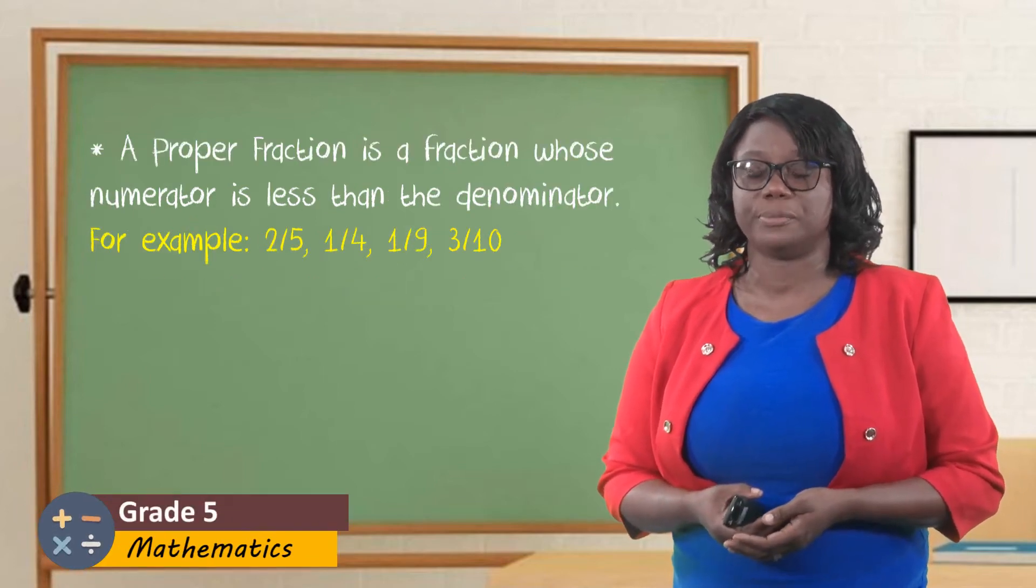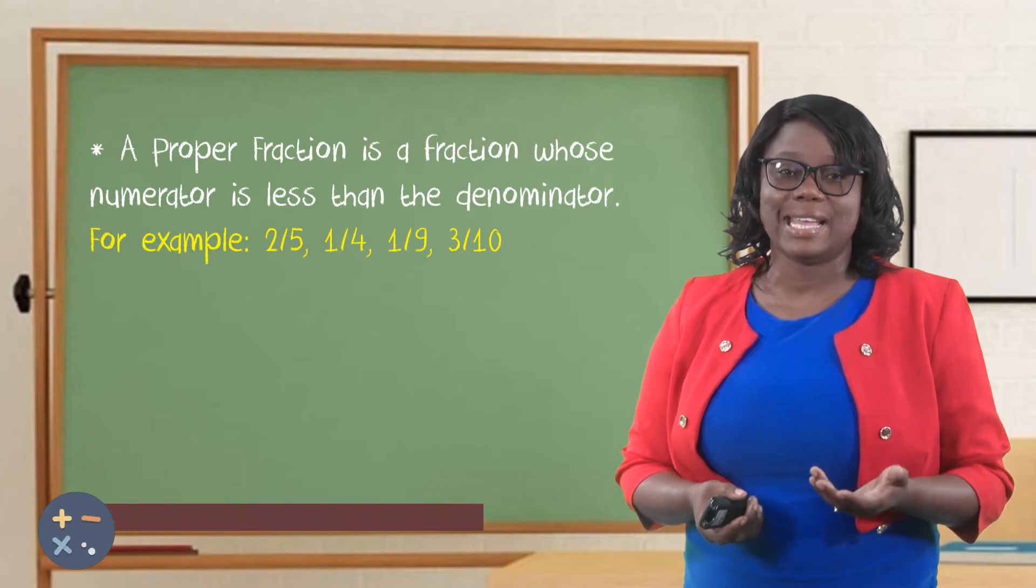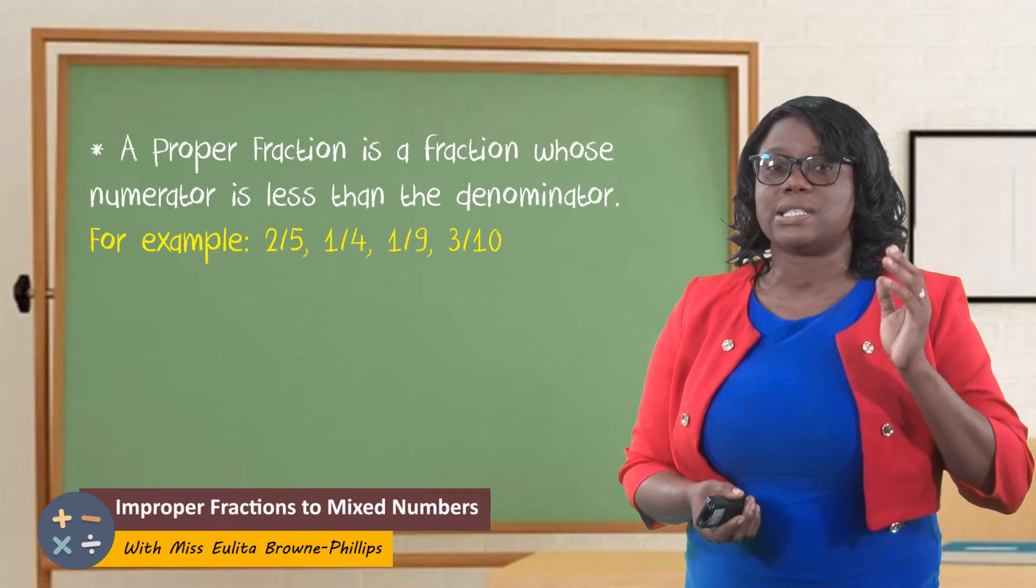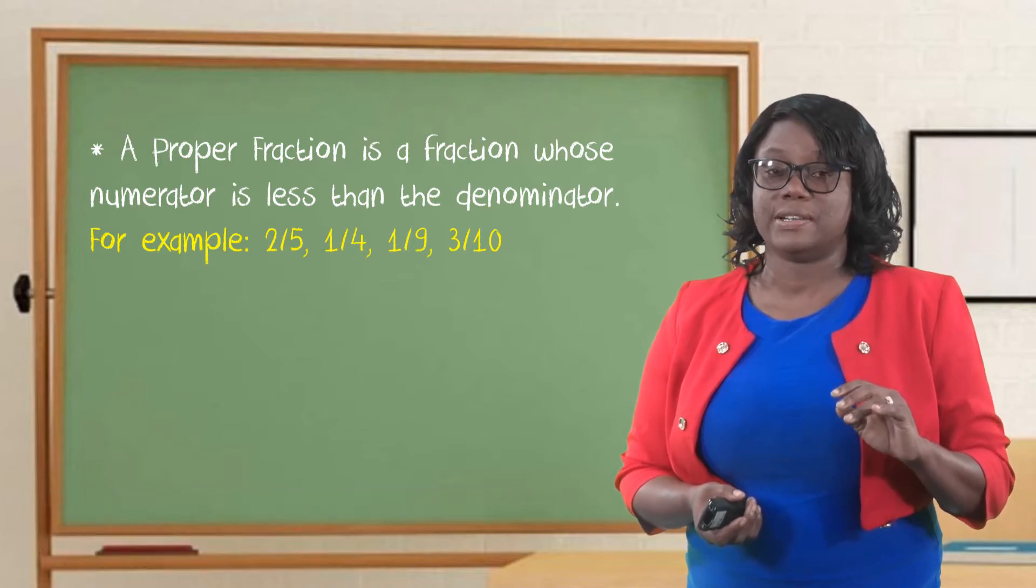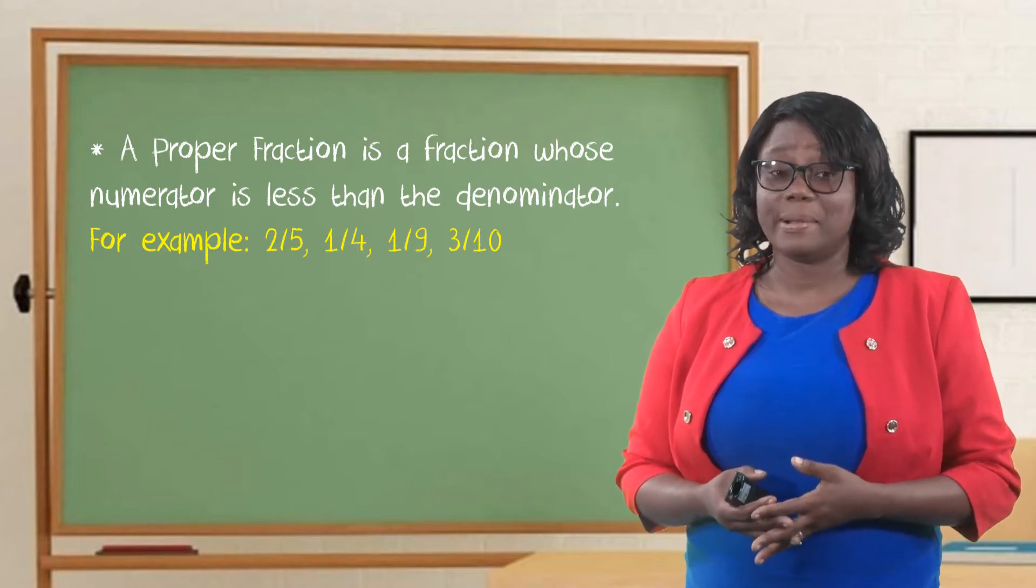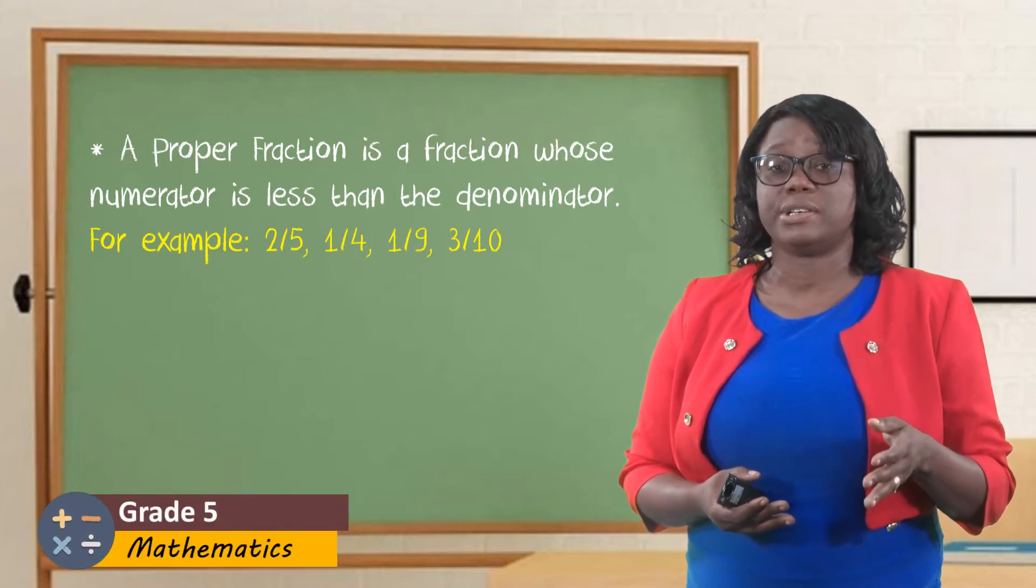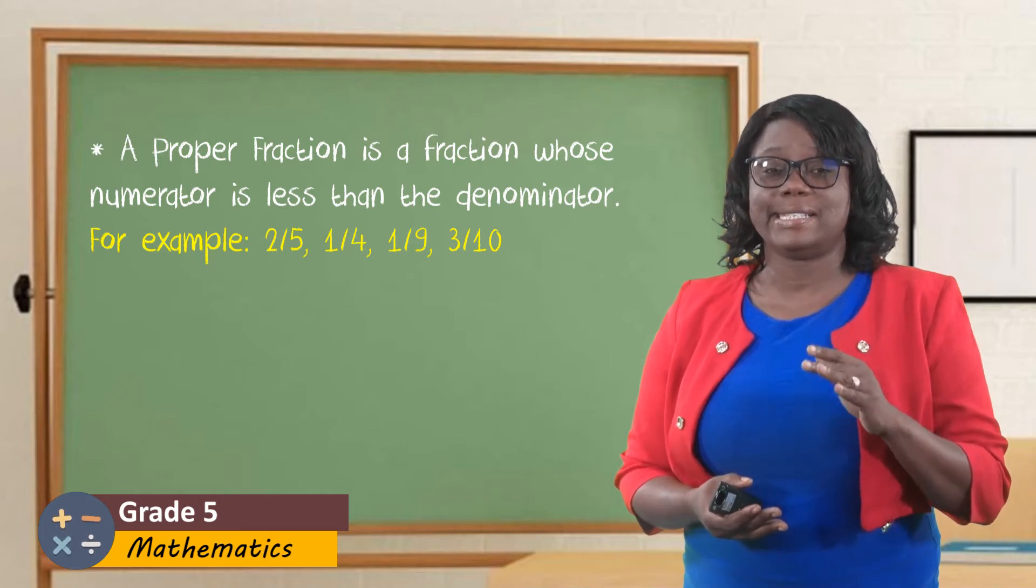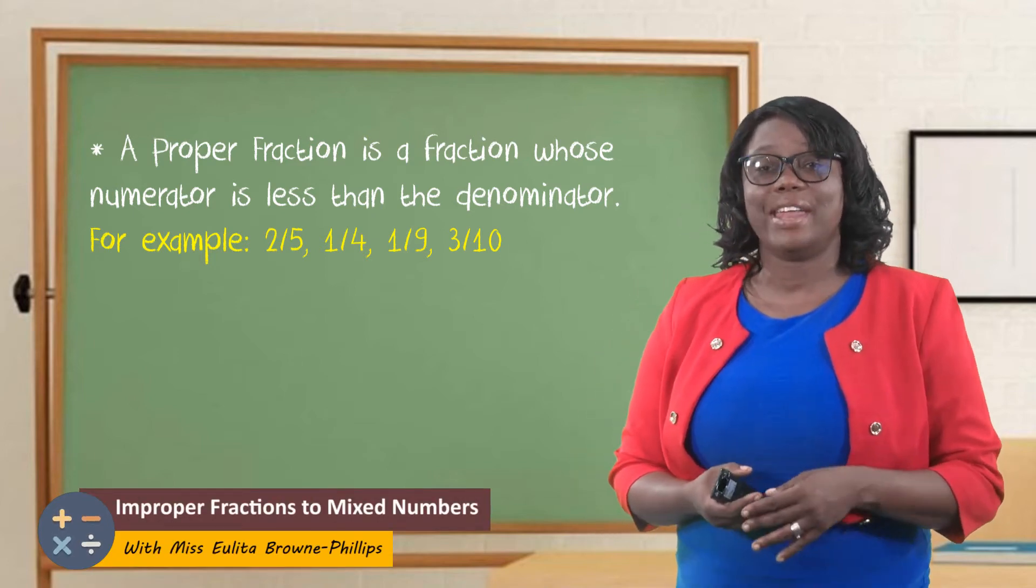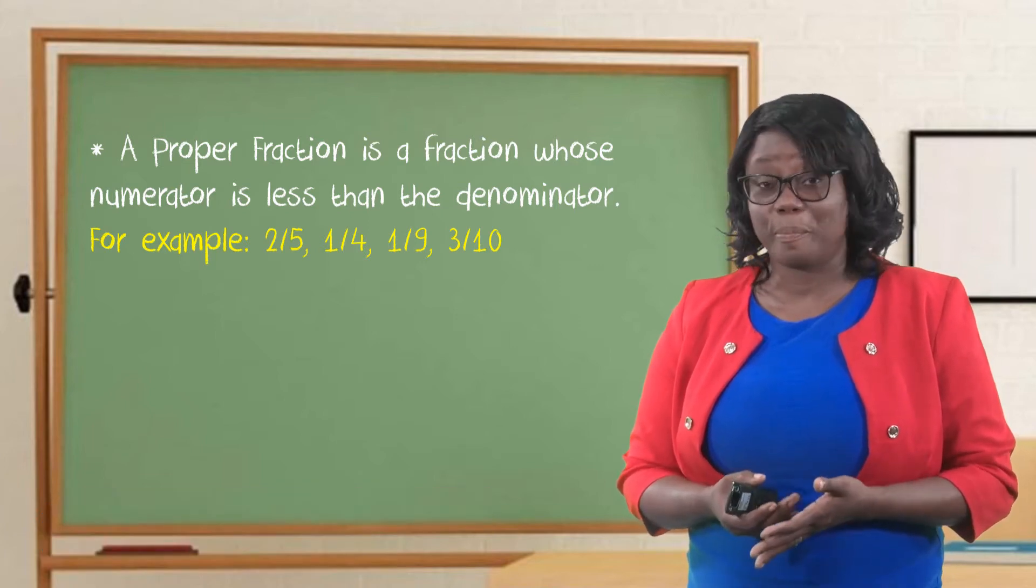So, let's start with a proper fraction. A proper fraction is a fraction whose numerator is less than the denominator. Or in simpler terms, you would say that it is smaller than the denominator. It has a small head and a big body. Example: two-fifths. In the fraction two-fifths, two is the numerator, and we see that two is less than five. One-fourth, one-ninth, and three-tenths. Could you boys and girls list some more proper fractions? I'm sure you will be able to.